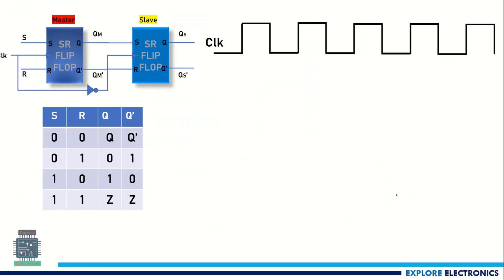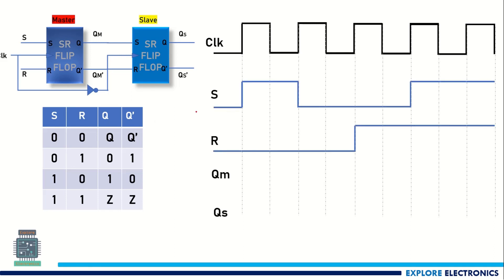Now let us look at the waveforms. I have taken the SR flip-flop truth table — you can see when S and R have different values, these are the values we get at Q and Q-bar. Let me take some random values for S and R. Starting with S=1 and R=0, then S changes to 0 with R still 0, then R changes to 1, and then S=1 and R=1. So we get all four cases.